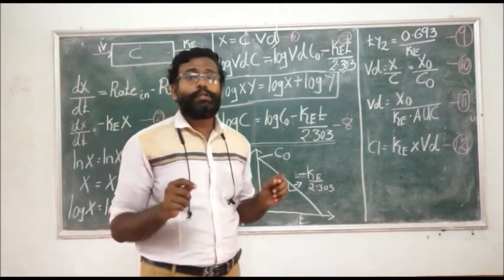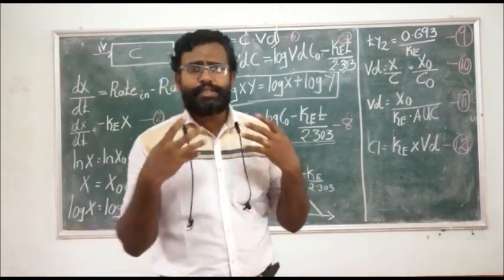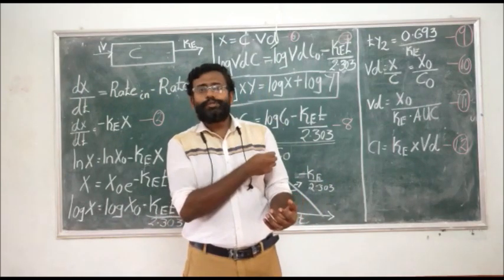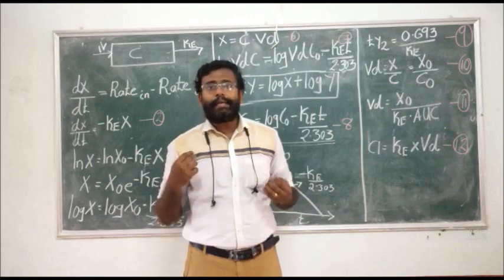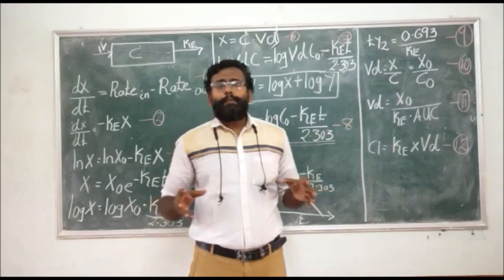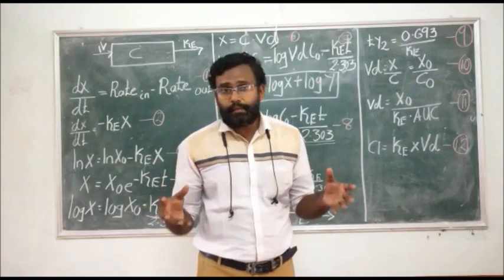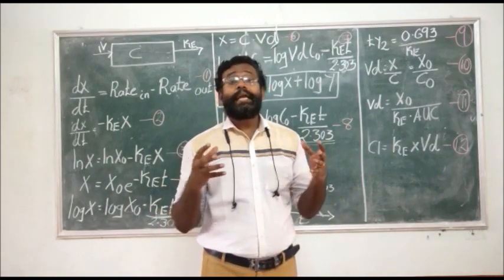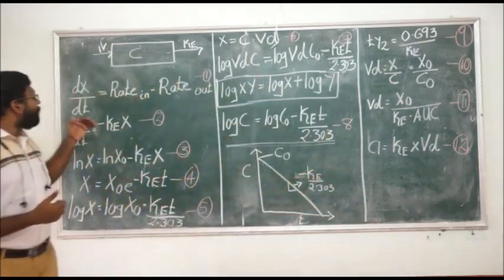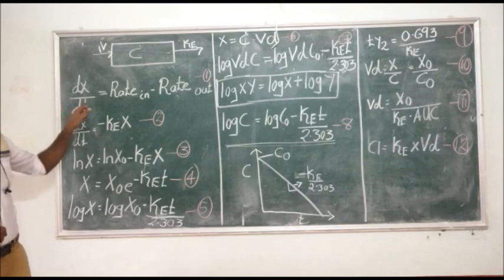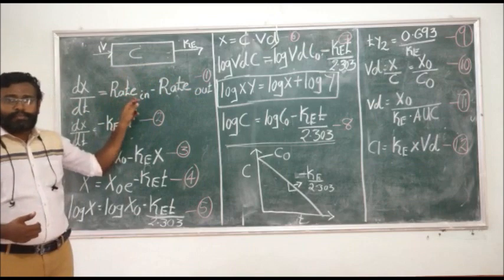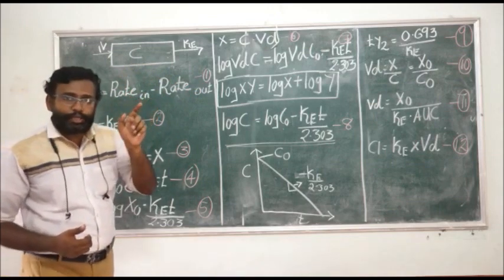The rate of change of drug in the body: if you consider your body, you are administering the drug by IV injection. The drug enters, distributes, and then starts eliminating from the body. The total amount of drug in the body is represented by the equation: dX/dt = rate in minus rate out. That means at what rate the drug is administered into your body minus at what rate the drug is eliminated out of the body.